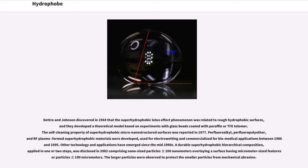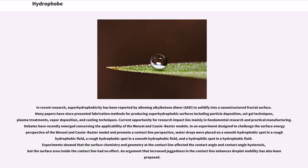Other technology and applications have emerged since the mid-1990s. A durable superhydrophobic hierarchical composition, applied in one or two steps, was disclosed in 2002 comprising nano-sized particles less than or equal to 100 nanometers overlaying a surface having micrometer-sized features or particles less than or equal to 100 micrometers. The larger particles were observed to protect the smaller particles from mechanical abrasion.